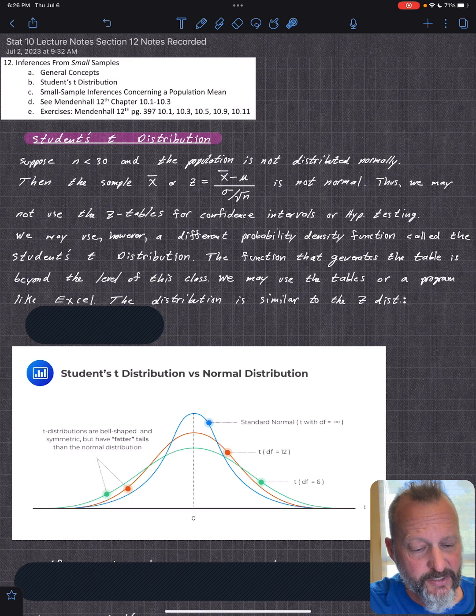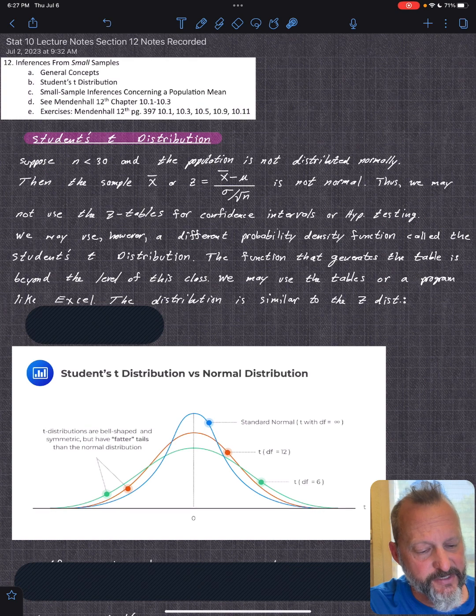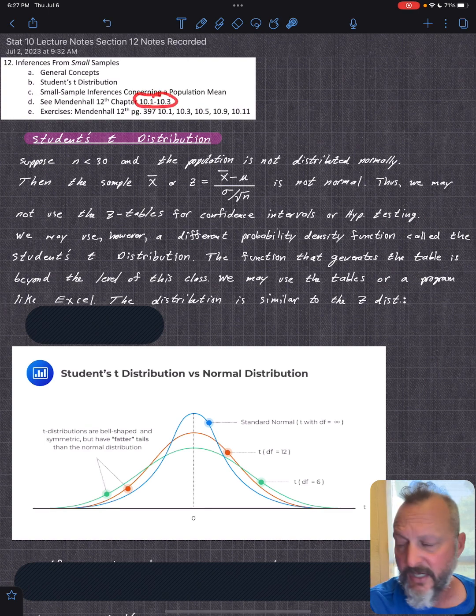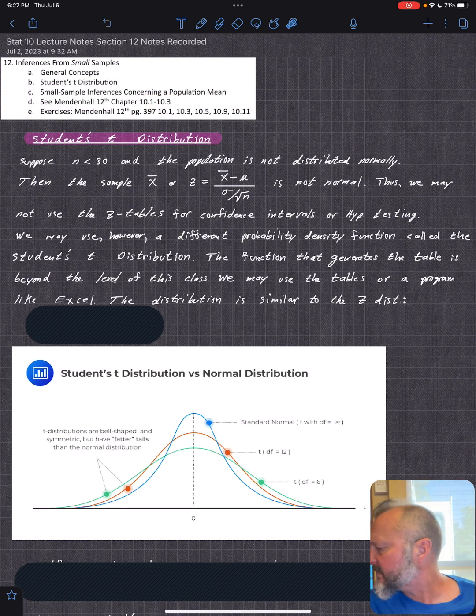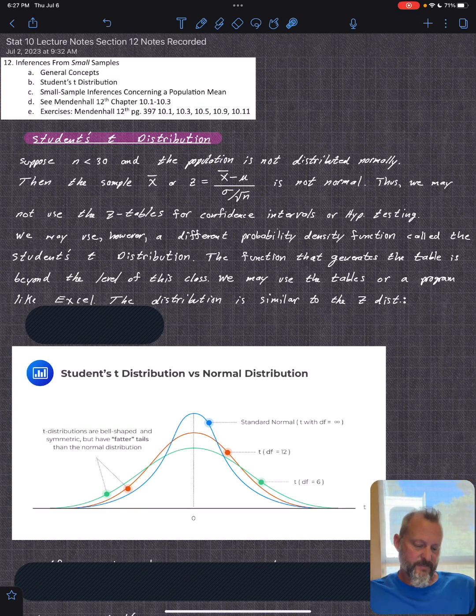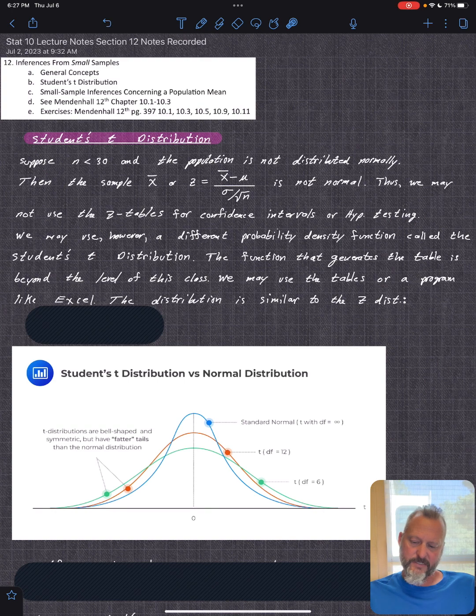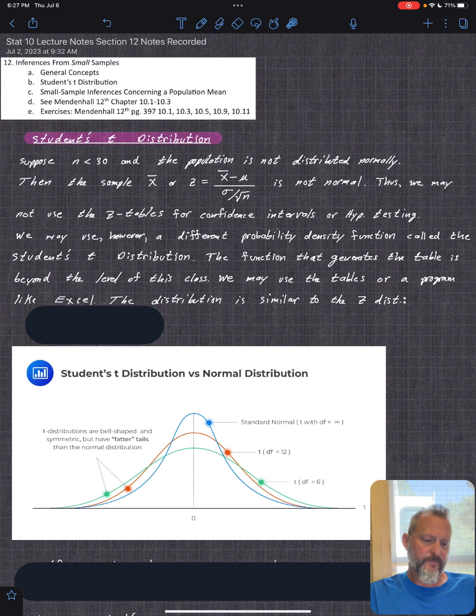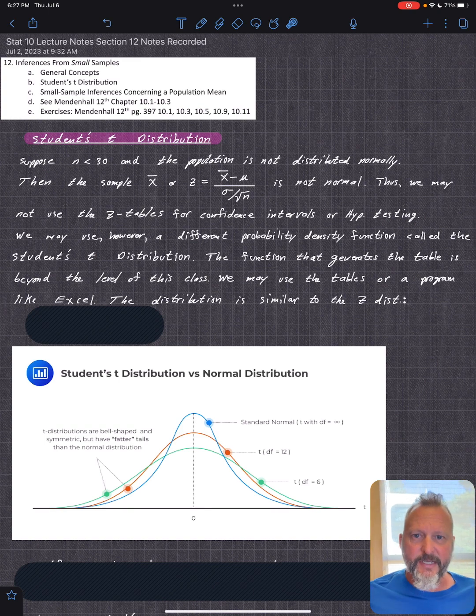Section 12, we'll first look at general concepts. It's what's called the student's t distribution and then small sample inferences for the population. We're only covering just the first part which is confidence intervals and hypothesis testing. We won't get into the two-means and variance type stuff.